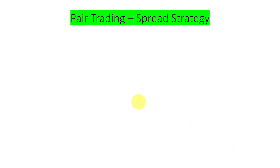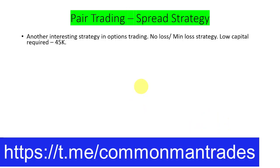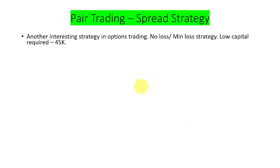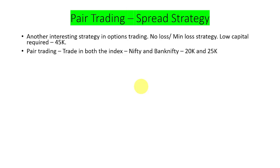This is another interesting strategy in options trading where there is absolutely no loss, or if so it will be very minimal loss. This makes the strategy interesting because it requires very less capital — only around 45,000. Pair trading is something where we trade in both indexes, that is Nifty and Bank Nifty. The capital required for Nifty is 20,000 whereas for Bank Nifty it is 25,000.